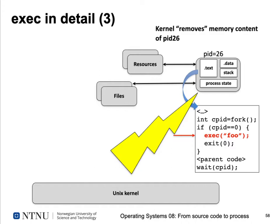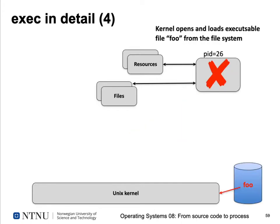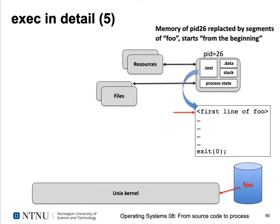The Unix kernel checks the parameters: is there an executable file foo that can be reached, and is the user allowed to execute it? If everything is fine, the kernel zaps the entire address space — the whole memory content of process ID 26 — so there is a brief moment with no valid memory contents. The kernel then opens and loads executable file foo from the filesystem, replaces the memory contents of process ID 26 with foo's segments, allocates stack and BSS from scratch, and starts executing the first instruction at the entry point address — until foo executes an exit system call.